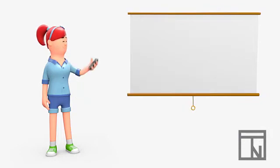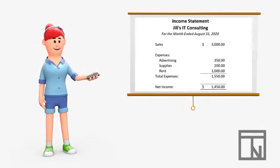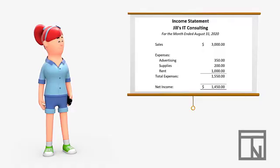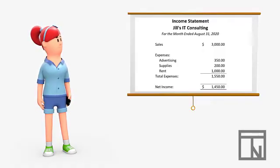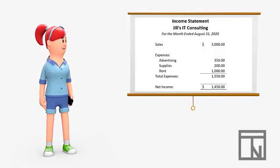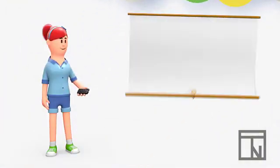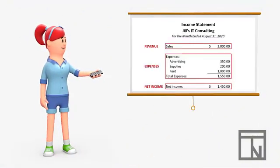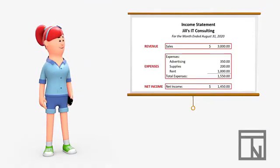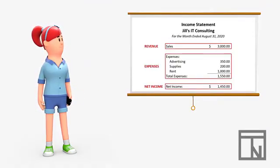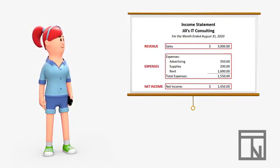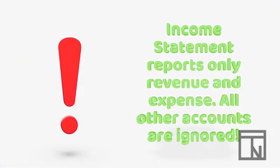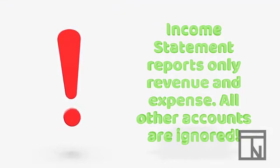Let's see what an income statement looks like on paper using the example we just used. Using the information from our example, Jill's income statement would look something like this. In its simplest form, an income statement shows the revenues earned and where that money came from. Then it shows totals for each category of expenses. At the bottom, the expenses are totaled and net income or loss is calculated. An income statement is one of the easiest reports to create. The important thing to remember is that an income statement only reports revenue and expenses.